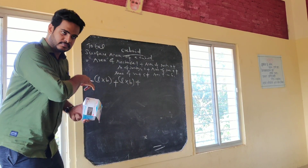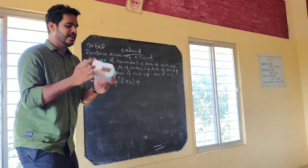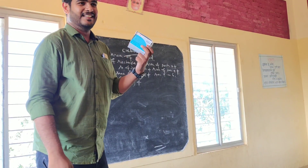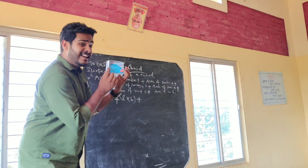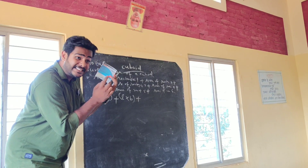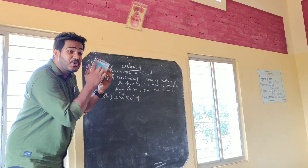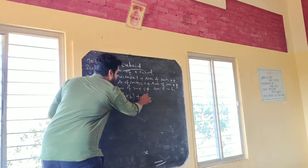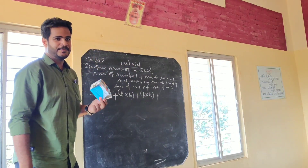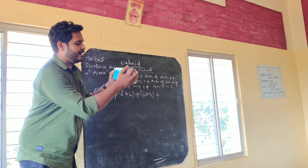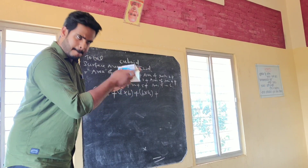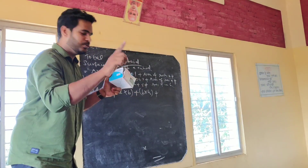The area of the third rectangle: this is breadth and this is height, so the area is B into H. The area of the fourth rectangle is again breadth into height, so it is also B into H.